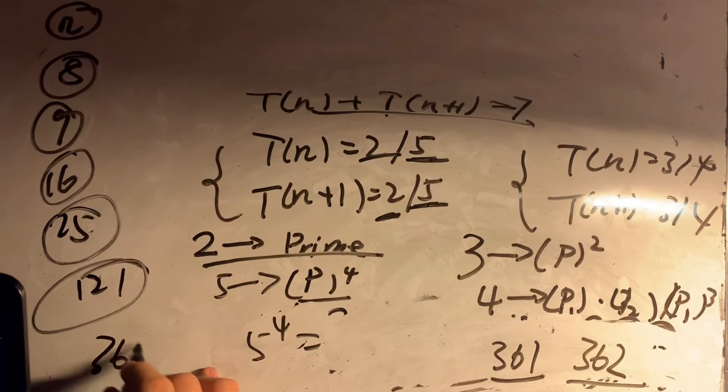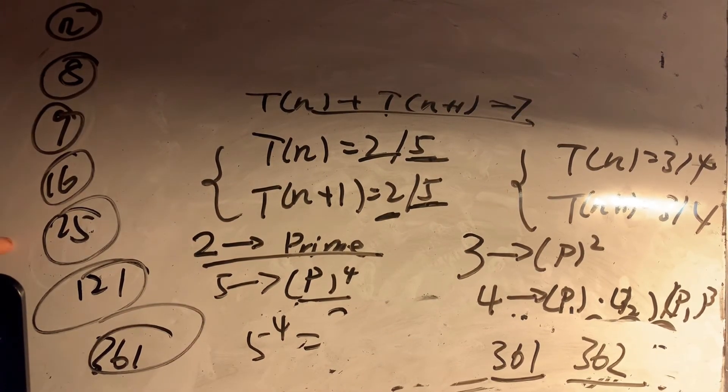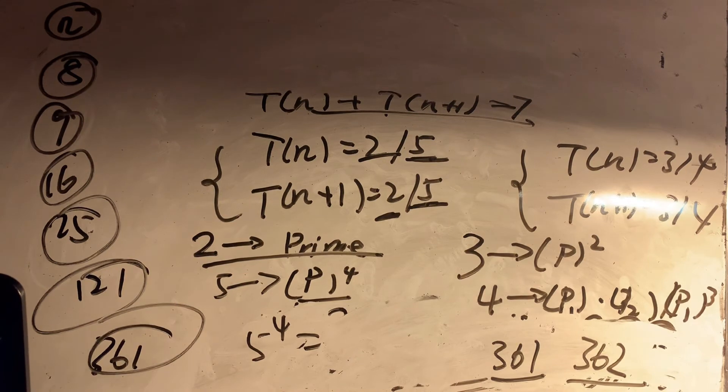So therefore we find our all six numbers: 8, 9, 16, 25, 121, 361. Let's add them up. [pause for calculation] 540.